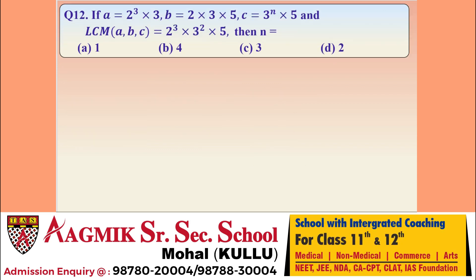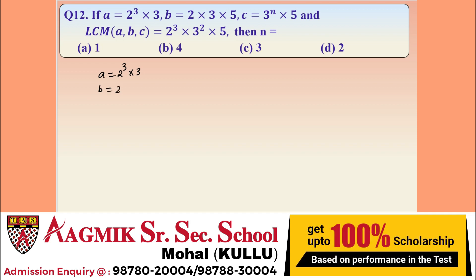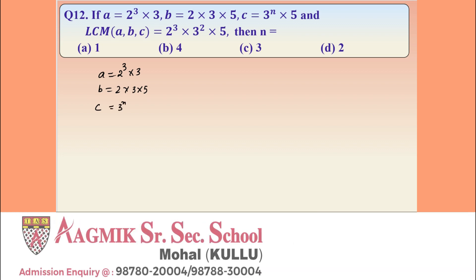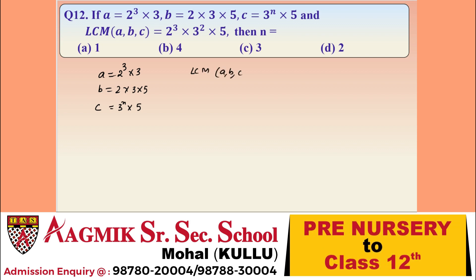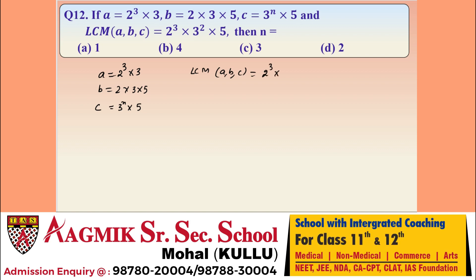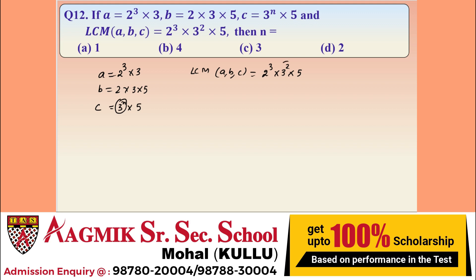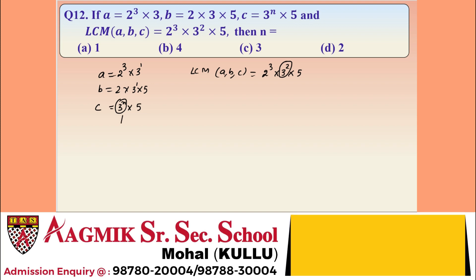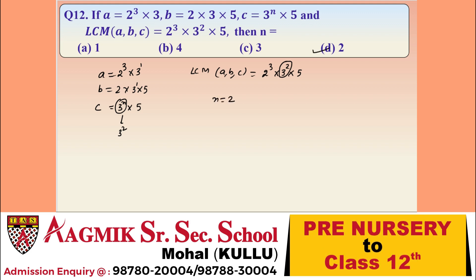Question 12: given A = 2×3×3, B = 2×3×5, and C = 3ⁿ×5. The LCM of A, B, C is given as 2³×3²×5. In LCM we take maximum powers. Since 3² appears in the LCM and A and B only have 3¹, the value of n in C must be 2. Option D is correct.